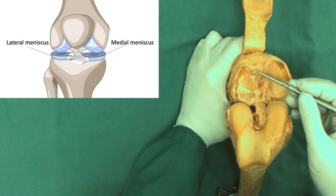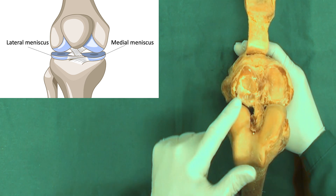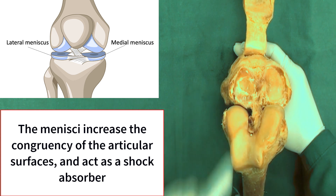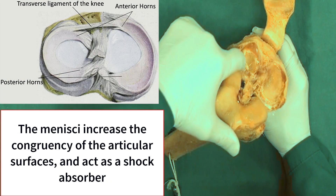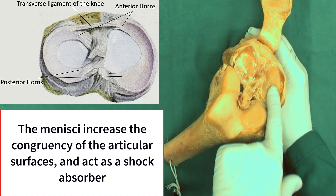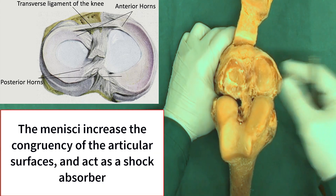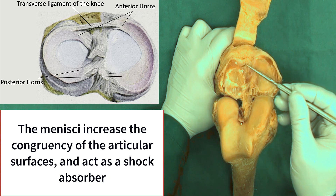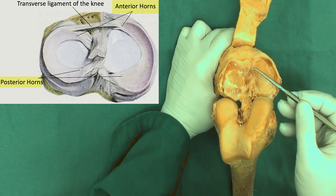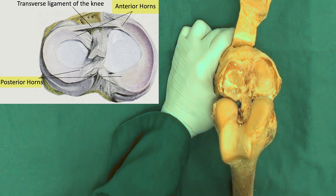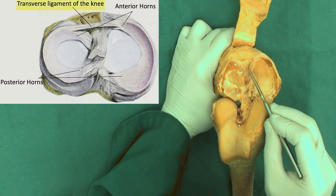Menisci are crescent-shaped fibrocartilage structures located between the articular surfaces. They increase the congruency of the articular surfaces — congruency refers to adaptability between the articular surfaces. The femoral condyles are kind of round but the tibial plateau is kind of flat, so menisci also act as shock absorbers inside the knee joint. Each meniscus has anterior and posterior ends, called horns, which attach in the intercondylar areas of the tibia. The anterior horns of the menisci are attached to each other by the transverse ligament of the knee.